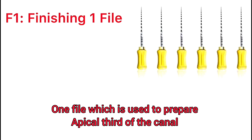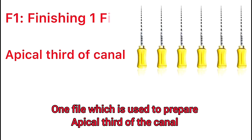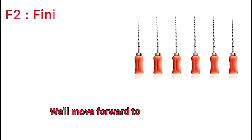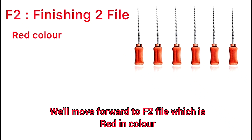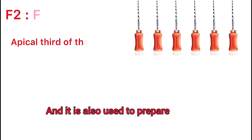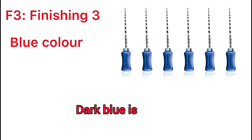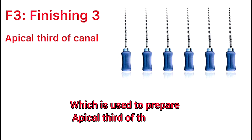Next is the F2 file, which is red in color and is also used to prepare the apical third of the canal. In certain cases we have to go till F3, which is dark blue in color and which is also used to prepare the apical third of the canal.